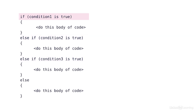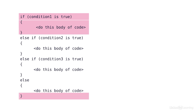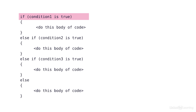If condition one is true, it will do the body of code at the top. Once it's done executing that body of code, it will find the closing curly bracket for the entire structure and continue on. If condition one is false, the structure will go to the second else-if and test condition two.